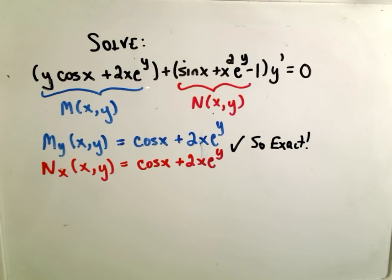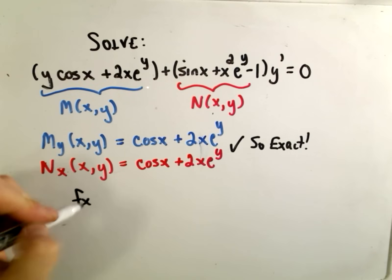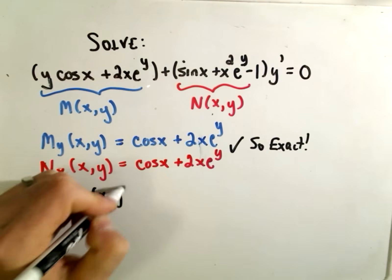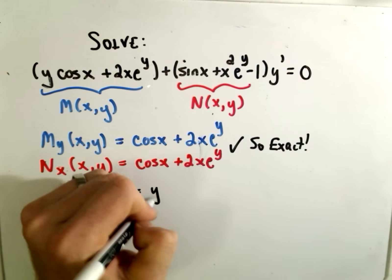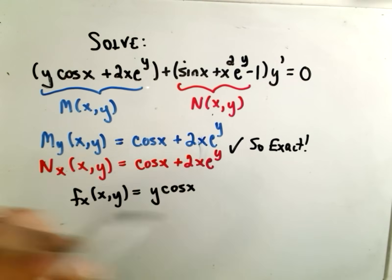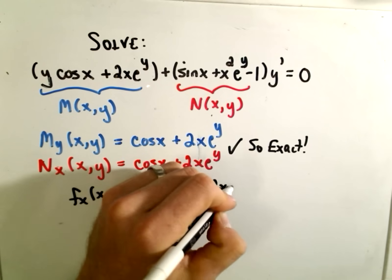Okay, so now the next thing that we want to do here. Okay, so now we know that there's a function. There's a partial that equals the function, the M function, which in this case is y cosine x plus 2x e to the y.